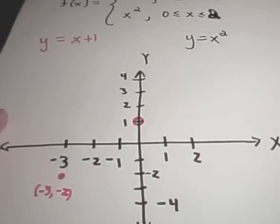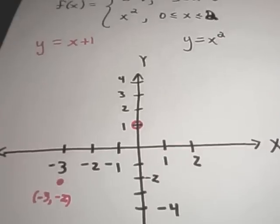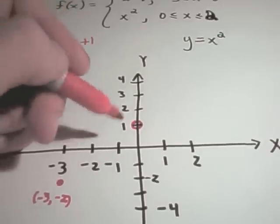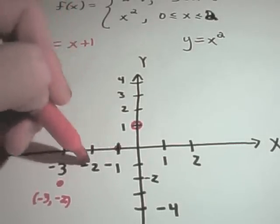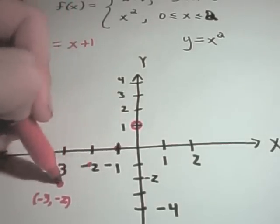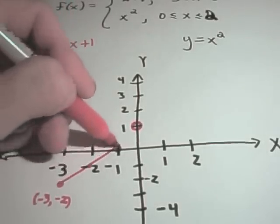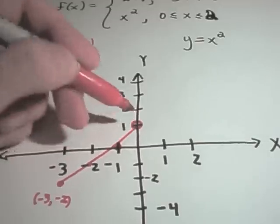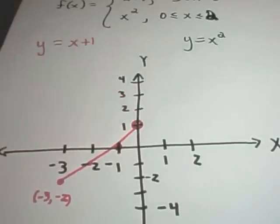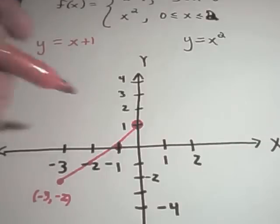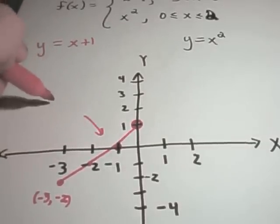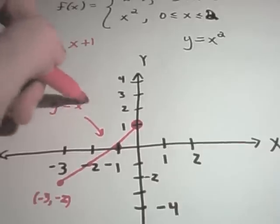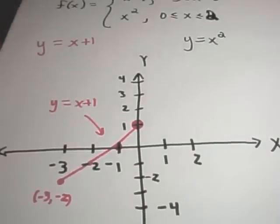Then you just connect the dots. My graph isn't perfect — this is supposed to be a linear function with an open circle at the endpoint. So this is the graph of y equals x plus 1 on that interval.